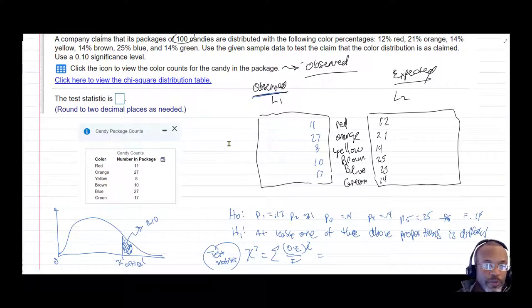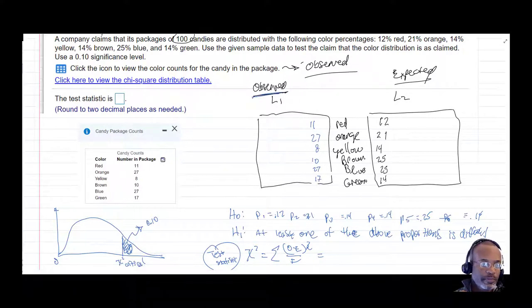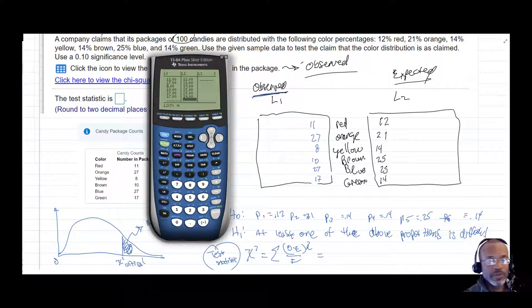So what we want to see is if our test statistic falls into the critical region, the rejection region, or if our test statistic is over here, where we don't reject the null hypothesis. So we'll go ahead and drop those two lists into our calculator to have it do the math for us. I think on my observed values, I'm missing a number. That should be 20. So let me rewrite this. So it'll be 11, 27, 8, 10, 27, and then 17. So I'll put those into the calculator.